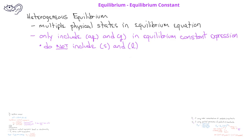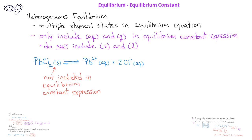We do not include reactants or products that are either pure solids or liquids, as indicated by the physical state sign after the formulas. So, for example, if we wanted to write the equilibrium constant expression for the equilibrium that arises when solid lead chloride dissolves to form aqueous lead ions and aqueous chloride ions, we would neglect the lead chloride solid, which would typically appear in the denominator. The equilibrium constant expression for this equilibrium would be Kc equals the molar concentration of Pb²⁺ ions multiplied by the square of the molar concentration of the Cl⁻ ions.